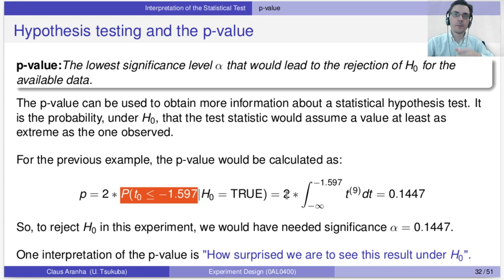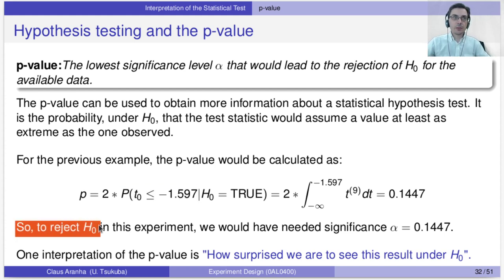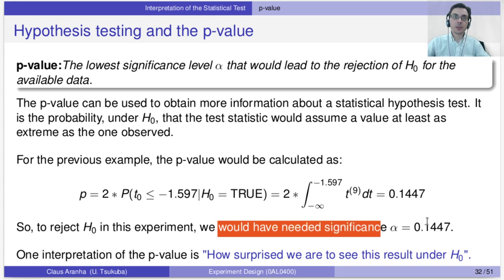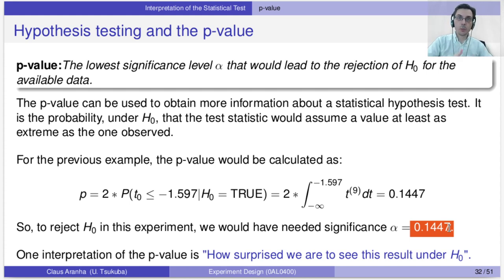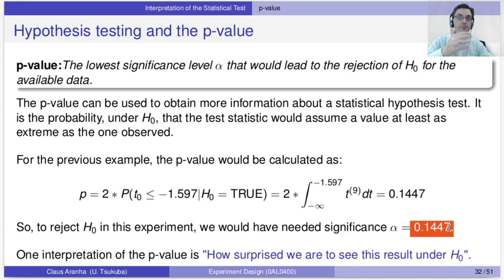To reject the null hypothesis in the experiment, we would need a significance of at least 0.14, or 86%. With a significance of 86% we would be able to reject the null hypothesis, but if the significance were higher we could not. Since we defined significance as 95%, we could not reject the null hypothesis, because we would need the significance to be at least 86% to do so.